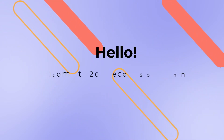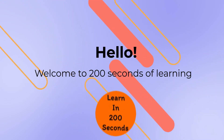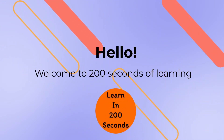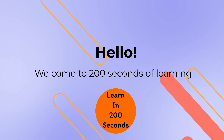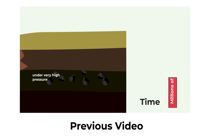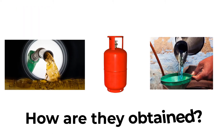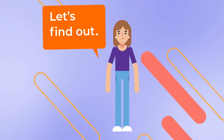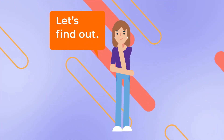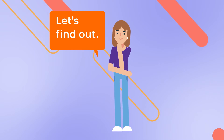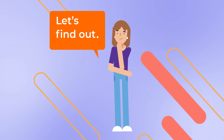Hello everyone, welcome to the 200 Seconds of Learning. This is the second video in the fossil fuels series. In the previous video, we have seen how fossil fuels are formed in nature and extracted as coal, petroleum, and natural gas. Have you wondered how petrol, diesel, LPG, and kerosene are obtained from these fuels? In this video, we will see how fossil fuels are refined and converted into the fuel that we use in day-to-day life.